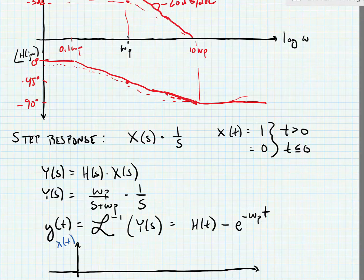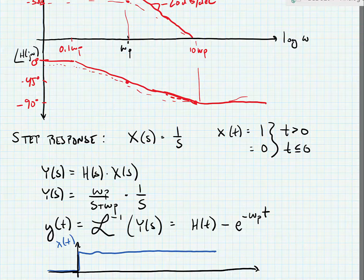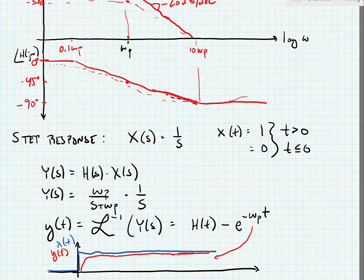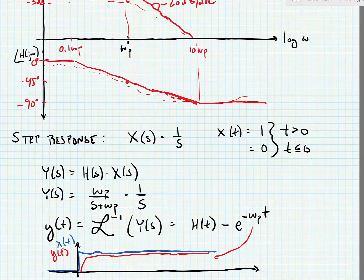We can now look at this in the time domain. x of t is a normal step function — it's 0 until time equals 0, and then it jumps up to its final value. Our equation for y of t tells us that we're going to have an exponential increase starting at time t equals 0 that will asymptotically approach the final value of the step function. So this is what we expect for a left-half plane pole. We've looked at the frequency response in terms of a Bode plot and also looked at the step response. In the next couple of videos, we're also going to look at a right-half plane pole, a left-half plane zero, and a right-half plane zero.